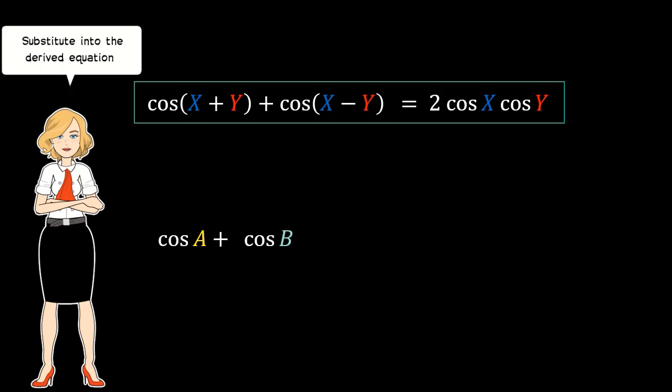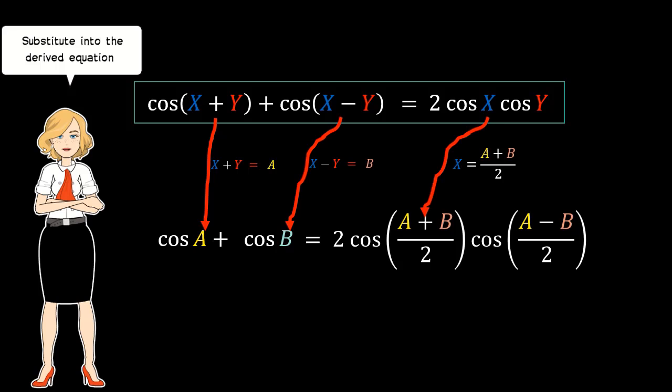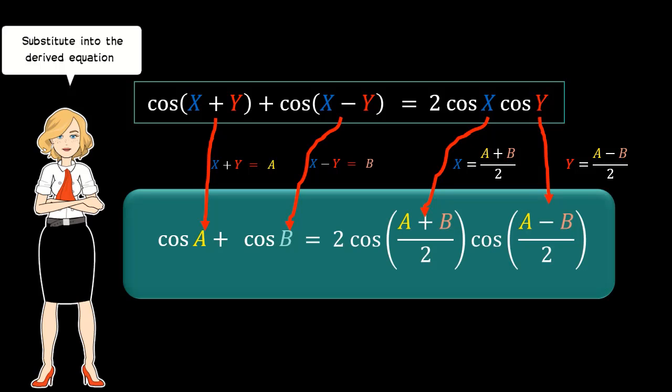We proceed with the substitution process: x+y equals a, x−y equals b, x equals (a+b)/2, and y equals (a−b)/2. Therefore, we get our third Factor Formula for cosine.